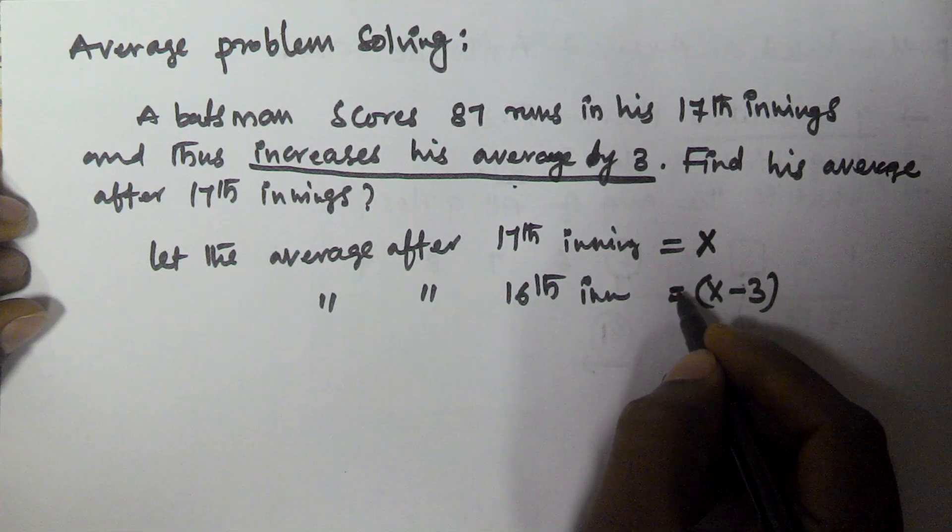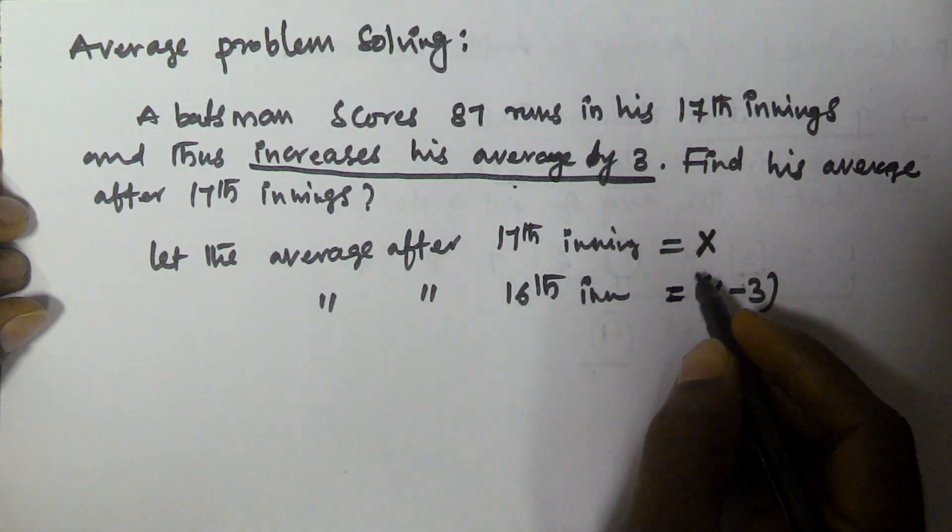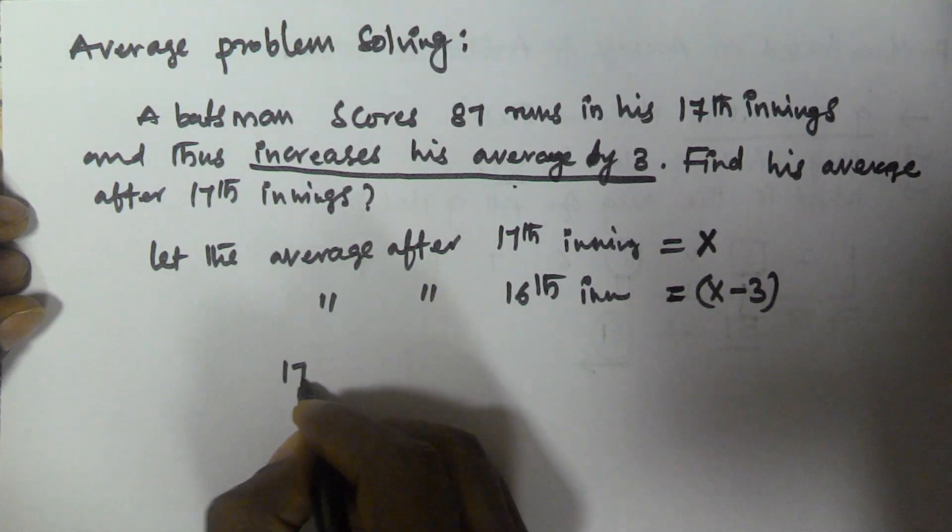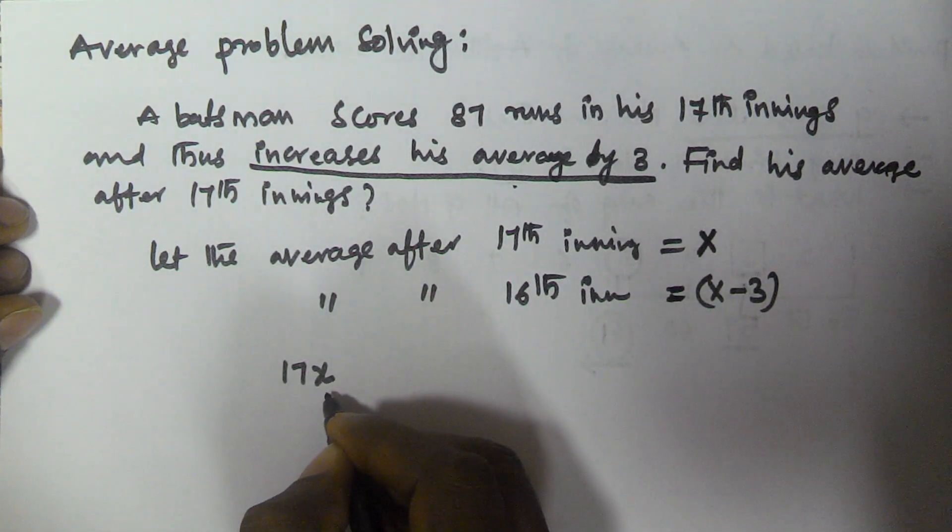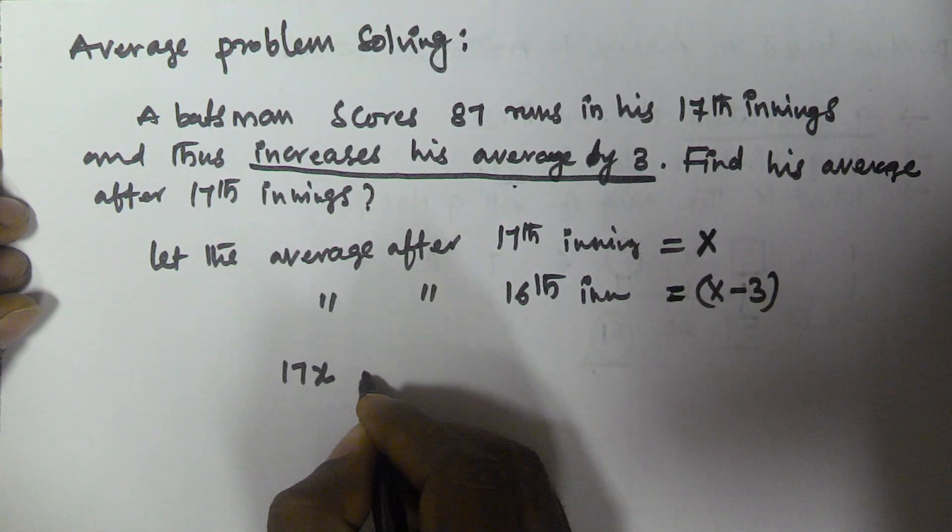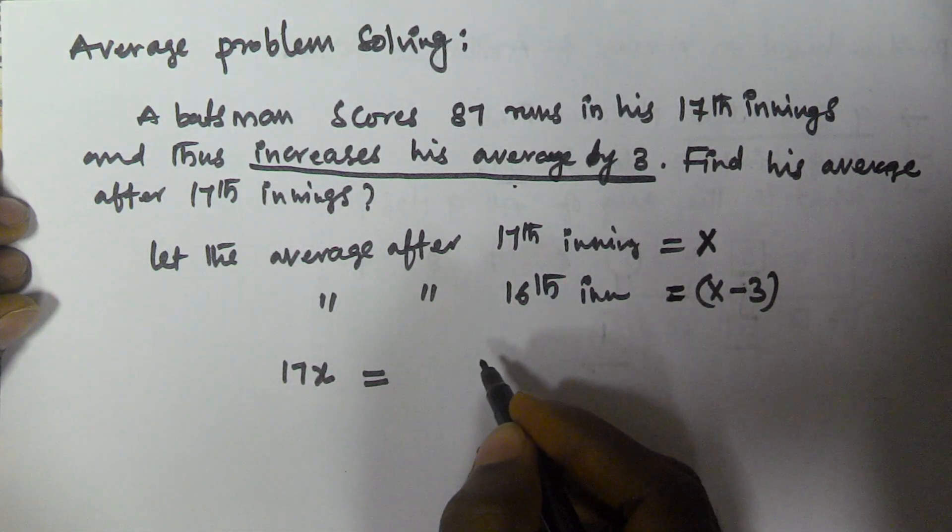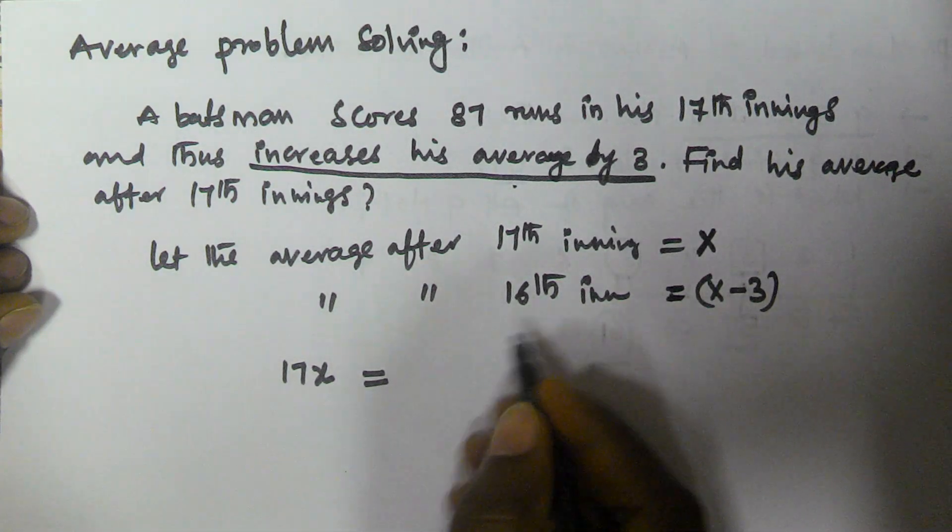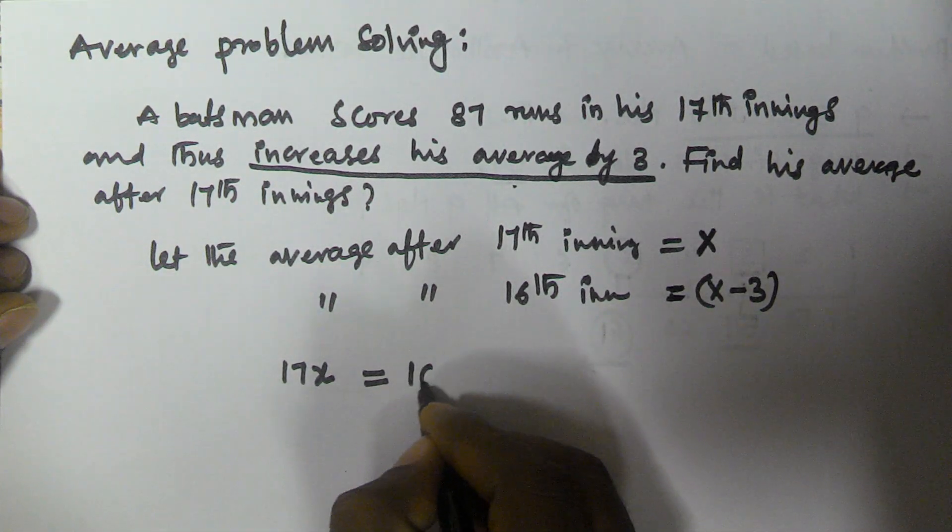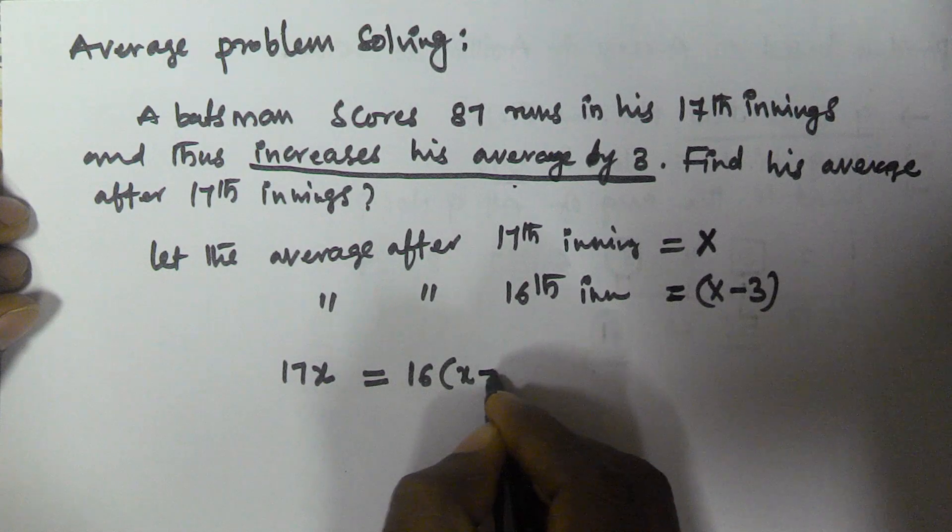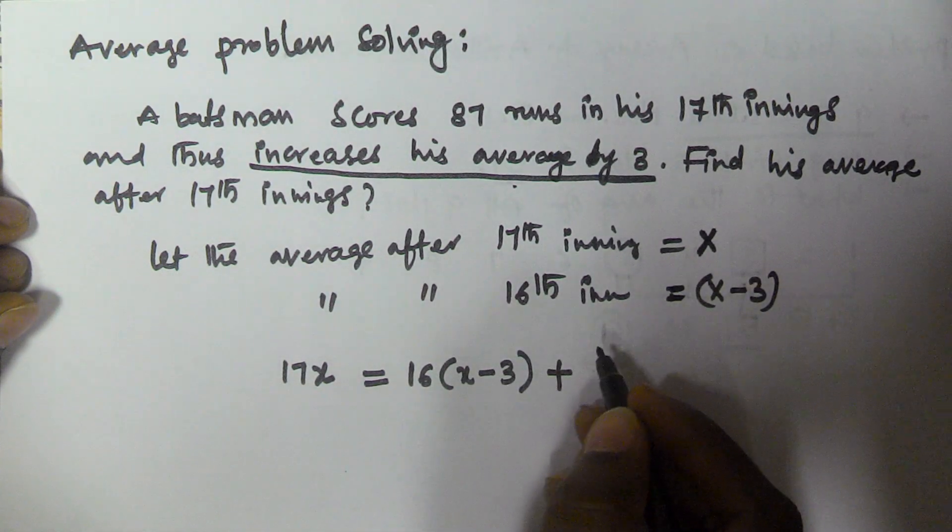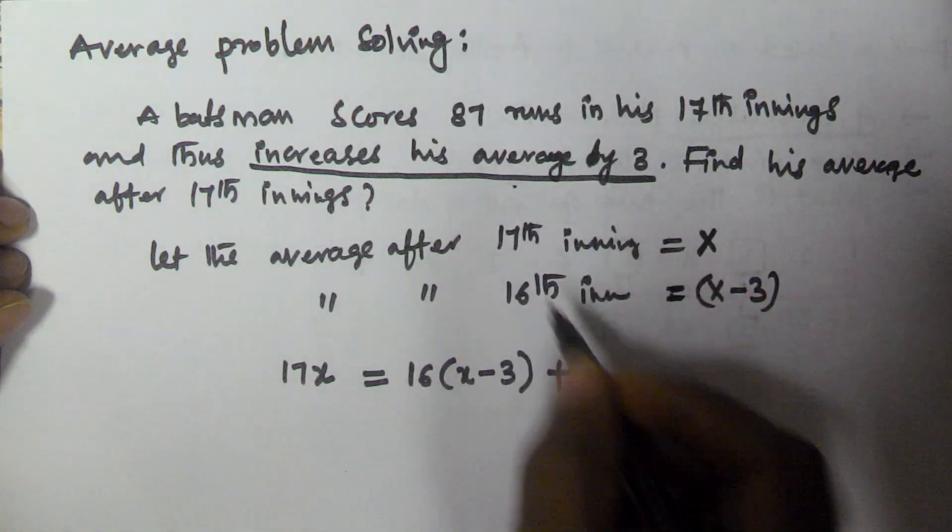So the total number of runs after 17th innings is 17x. So 17x equals the number of runs made till 16th innings plus 17th innings. The number of runs till 16th innings is 16 times (x-3), plus the runs in 17th innings, that is 87.